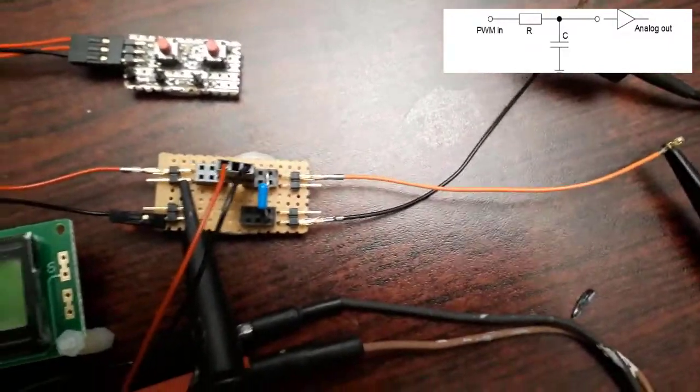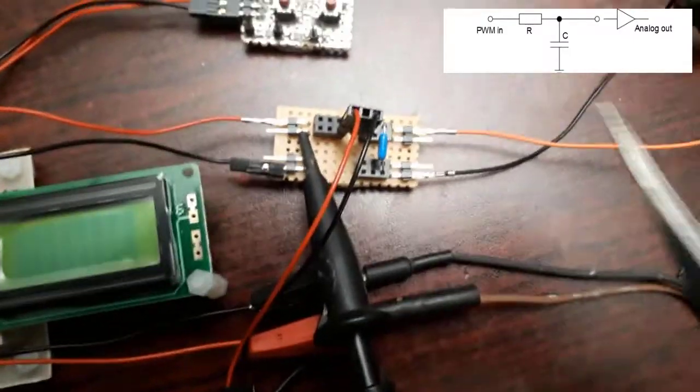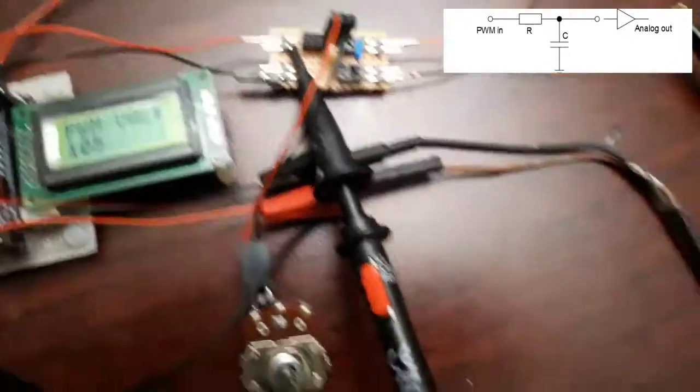And one on the output. That is channel 3. We can see the signal that is coming out of the RC network here.